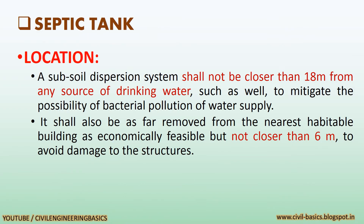Now we will see the requirements of septic tank. Regarding location: a subsoil dispersion system shall not be closer than 18 meter from any source of drinking water, such as a well, to mitigate the possibility of bacterial pollution of water supply. It shall also be as far removed from the nearest habitable building as economically feasible, but not closer than 6 meter, to avoid damage to structures.